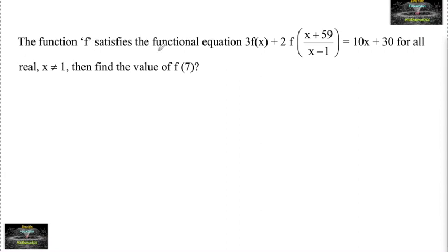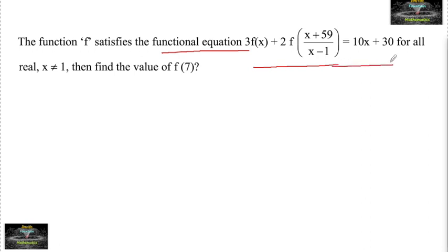The function f satisfies the functional equation: 3 times f of x plus 2 times f of (x + 59)/(x − 1) is equal to 10x + 30, for all x not equal to 1. We need to find the value of f(7).